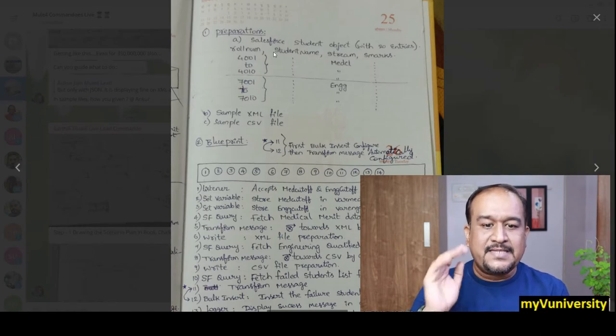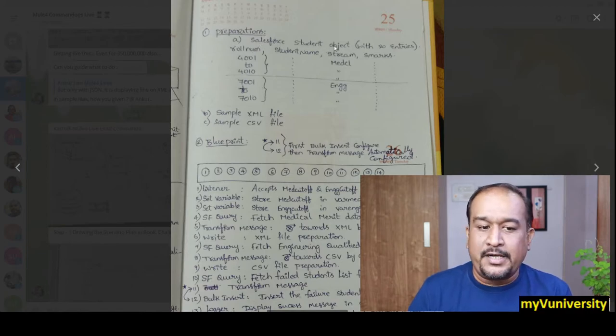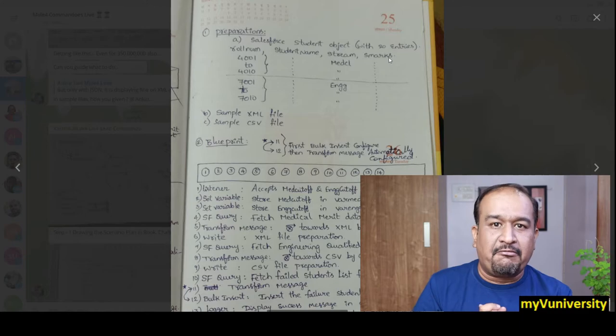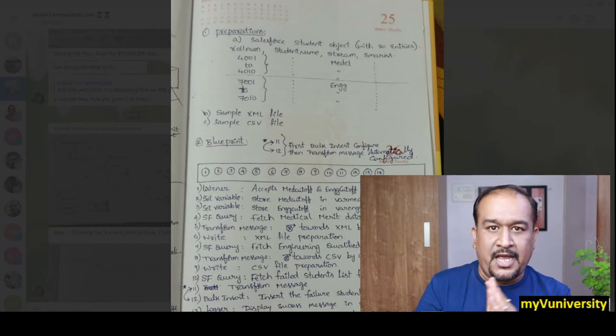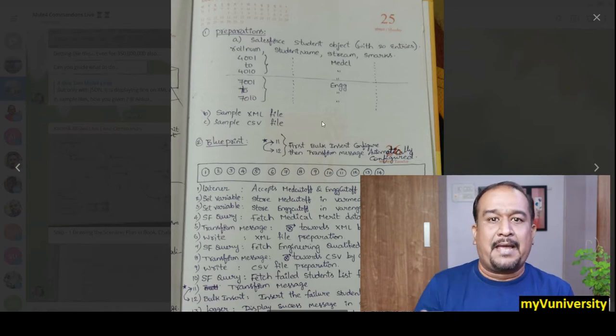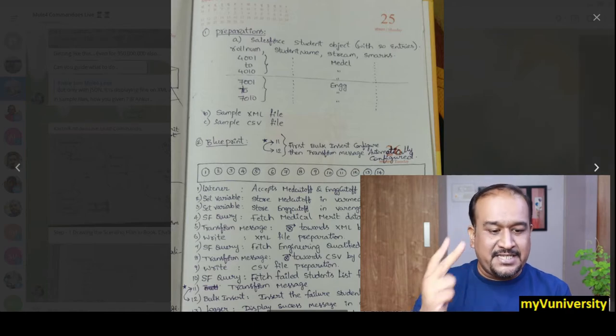Then you can see the next step—this is preparation. Salesforce student object is required: roll number, student name, stream, S marks. These are the fields in that Salesforce object. This is a raw schema creation for Salesforce object, and you can create that schema actually. Then sample XML file, sample CSV file—that's what to be also created as a part of preparation. This is the second step, which is preparation.